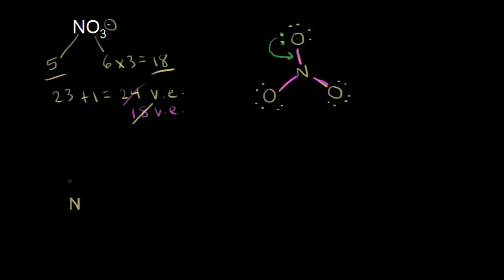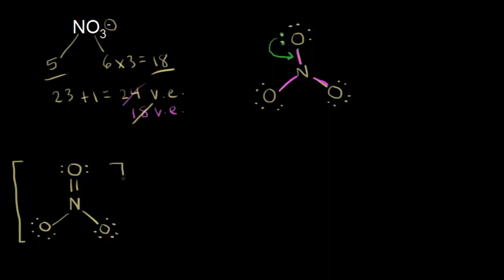We would have our nitrogen now with a double bond to our top oxygen. The top oxygen had three lone pairs of electrons, but now it has only two because the electrons in green moved in to form a double bond. The nitrogen is bonded to an oxygen on the bottom left and an oxygen on the bottom right. This is a valid dot structure. We'll put this in brackets with a negative charge outside. That's one possible dot structure.